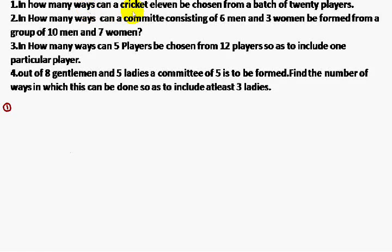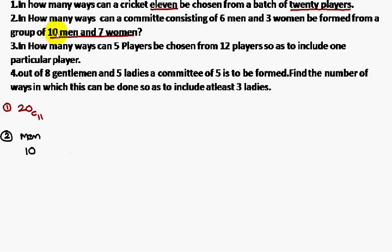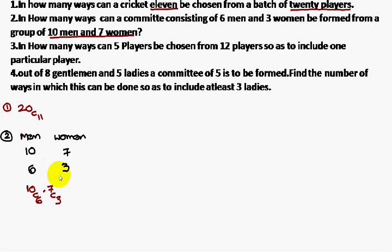In how many ways can a cricket 11 be chosen from a batch of 20 players? From 20 players choose 11: 20C11 ways. Second: in how many ways can a committee of six men and three women be formed from a group of 10 men and seven women? Choose six men from 10: 10C6. Choose three women from seven: 7C3. Therefore total is 10C6 into 7C3.